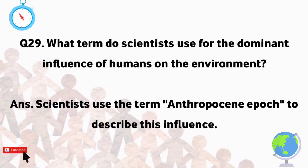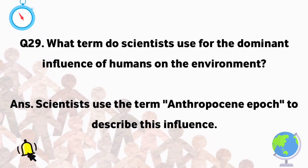What term do scientists use for the dominant influence of humans on the environment? Scientists use the term Anthropocene Epoch to describe this influence.